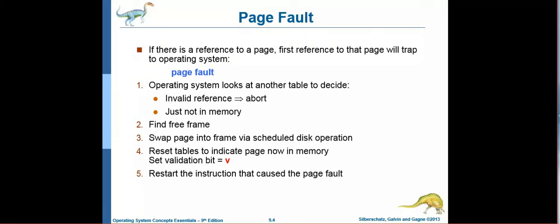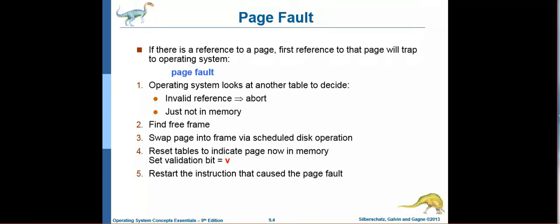If you have virtual memory and there is a page fault, the first reference to that page will trap to the operating system. The operating system determines whether the page is valid but just not in memory — if so, you don't need to generate a page fault error; otherwise, page fault handling begins.